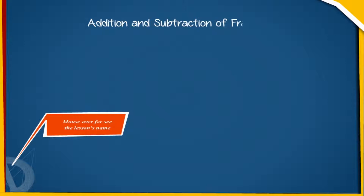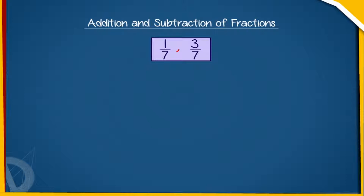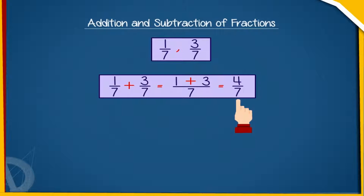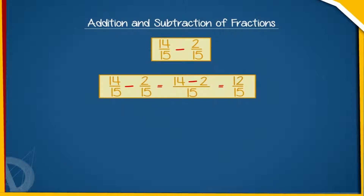Addition and Subtraction of Fractions: Let us add two like fractions, 1 by 7 and 3 by 7. For this, we add the numerators only, as the denominators are the same and remain unchanged. 1 by 7 plus 3 by 7 equals 1 plus 3 by 7, which equals 4 by 7. This tells us that the sum of two or more like fractions equals the sum of numerators divided by the common denominator. Similarly, we subtract two like fractions: for example, subtracting 2 by 15 from 14 by 15 gives the difference of numerators divided by the common denominator.